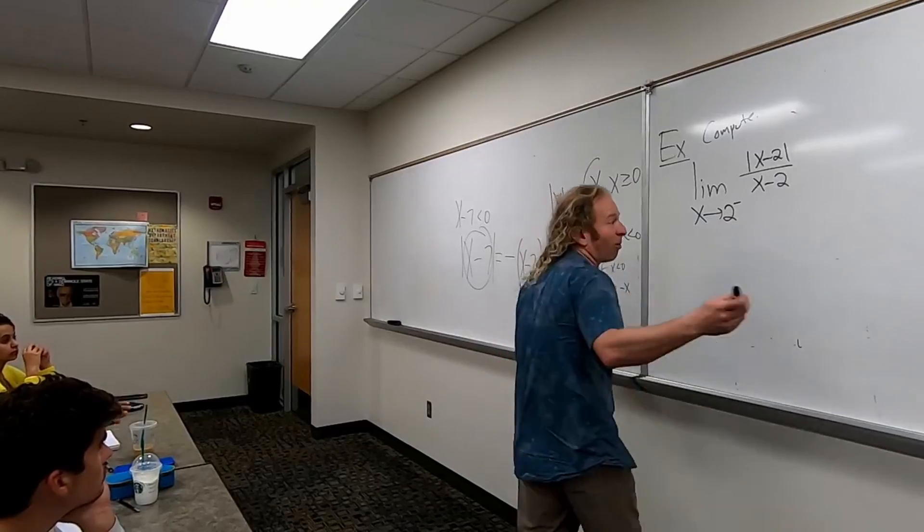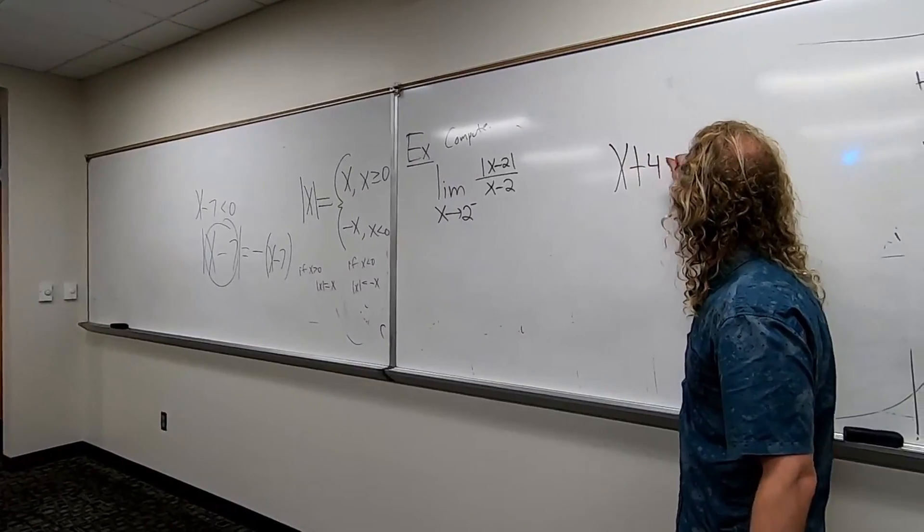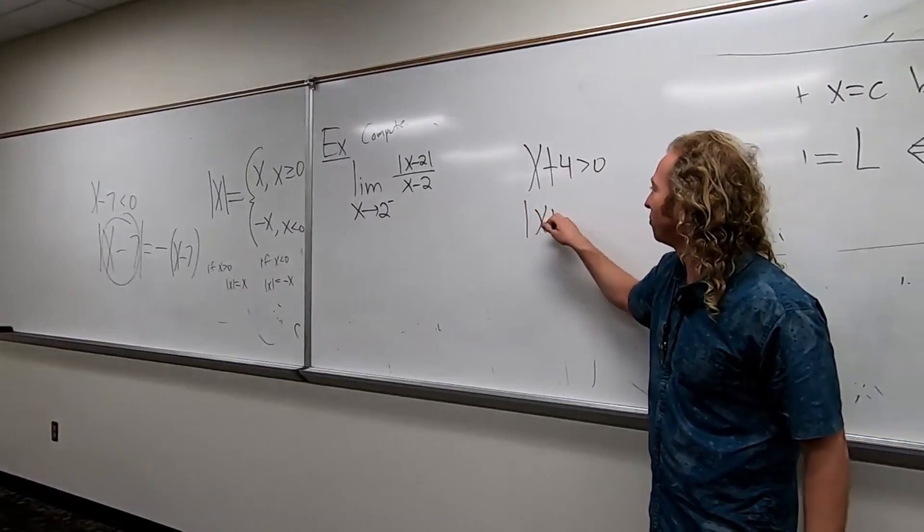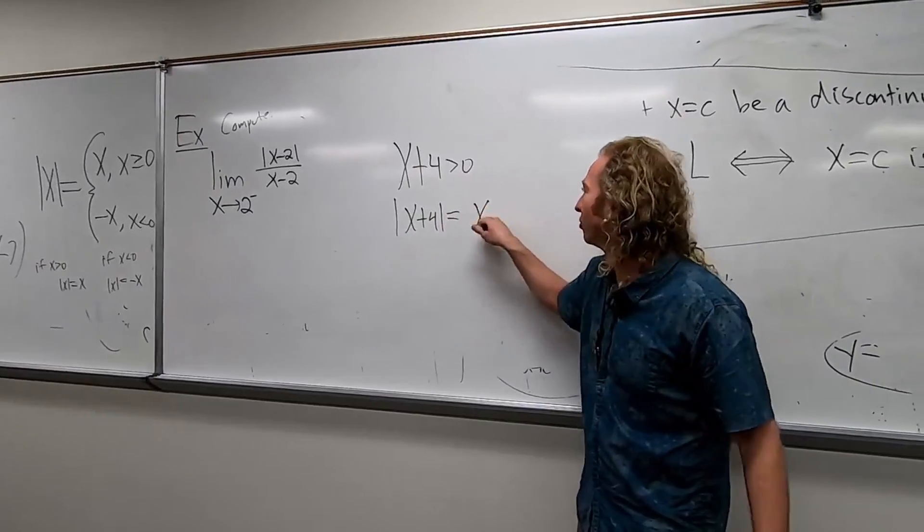So, one more, one more. I'll erase it. Say we have x plus 4 greater than 0. And you have the absolute value of x plus 4. Do you need a negative here? No, you don't. Good.